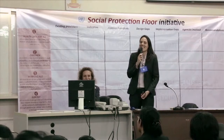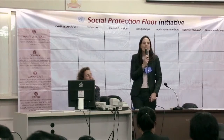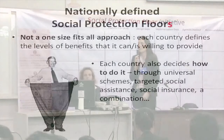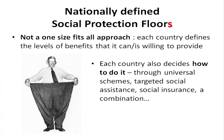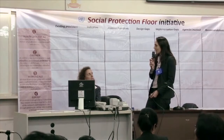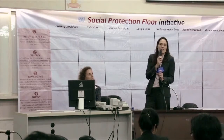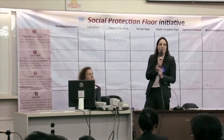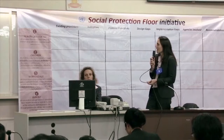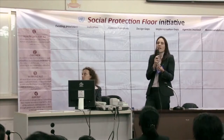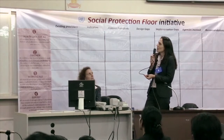The Social Protection Floor does not prescribe one solution or formula for all countries — it is not a one-size-fits-all approach. The Recommendation provides guidelines on how to do it, but it is left to governments and national stakeholders to define the guarantees and how to reach universality. This is why the full title is the 'Recommendation Concerning National Floors of Social Protection' — with emphasis on nationally defined social protection floors, allowing a large variety of different schemes to be implemented.